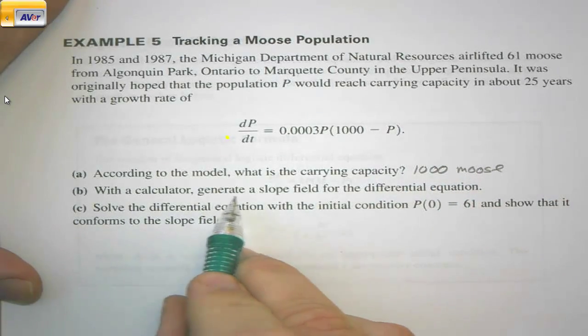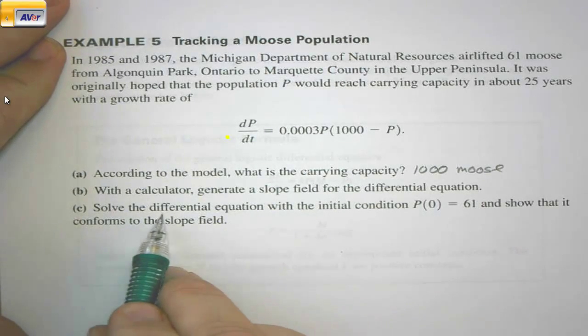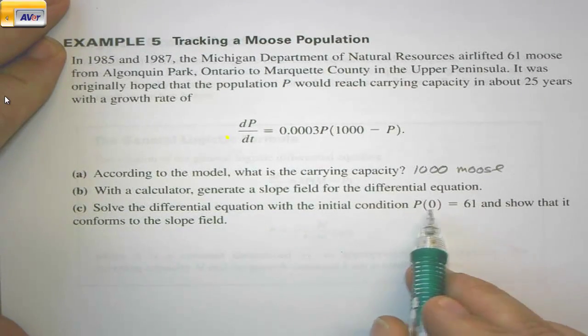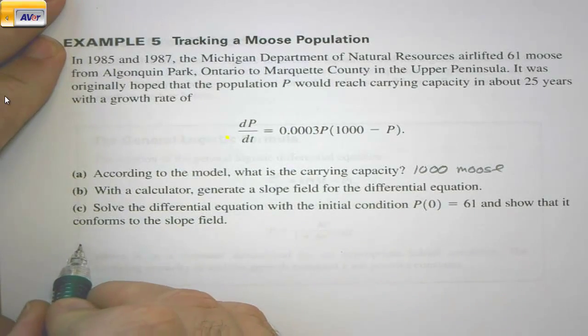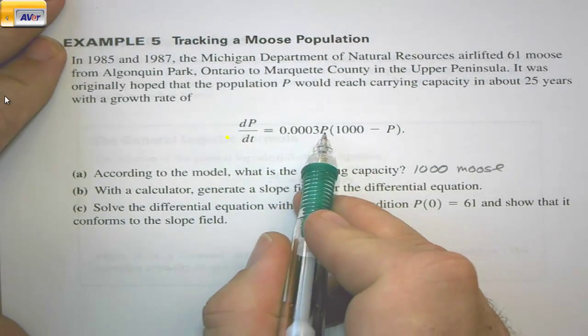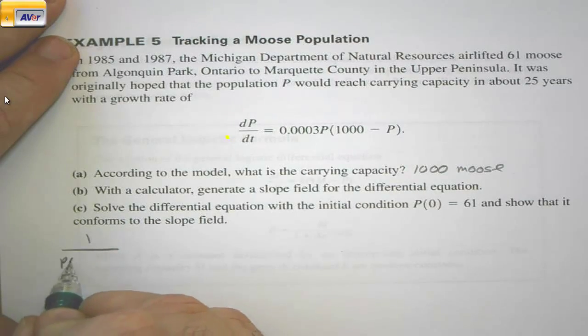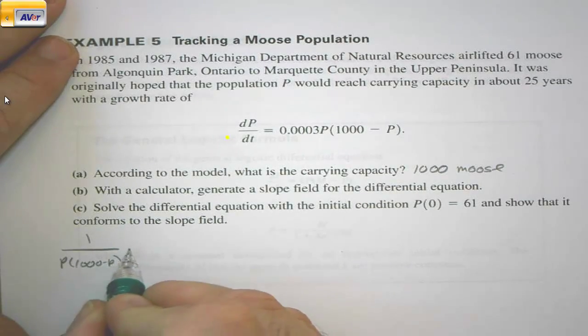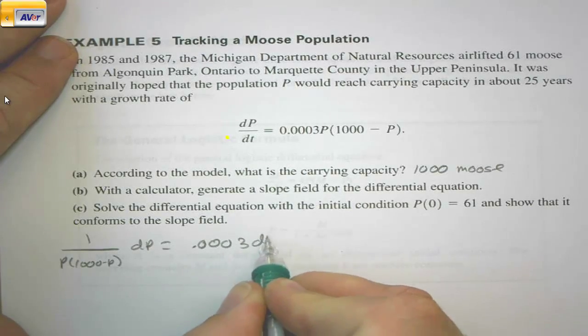With a calculator, generate a slope field. Let's skip that. Letter C: Solve the differential equation with the initial condition P(0) = 61, and show that it conforms to the slope field. So we need to get the P's over with dP. So we have 1/(P(1000 - P)) dP = 0.0003 dt. And we're going to integrate both sides, so we need partial fractions.